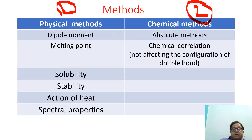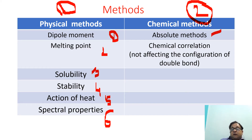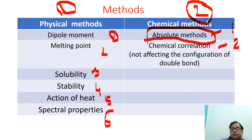Physical methods include dipole moment, melting point, solubility, stability, action of heat, and spectral properties. On the other hand, chemical methods are absolute methods and the chemical correlation method. One important point to keep in mind is that in absolute methods we generally destroy the identity of the compound, but in the chemical correlation method we retain the configuration of the double bond.